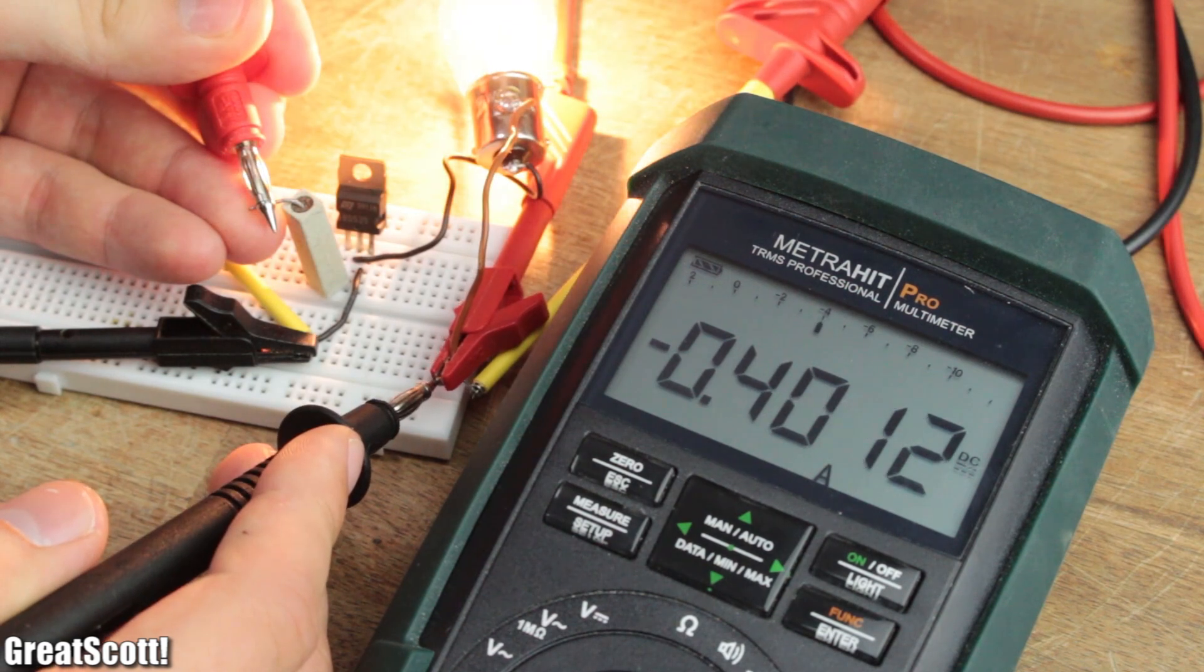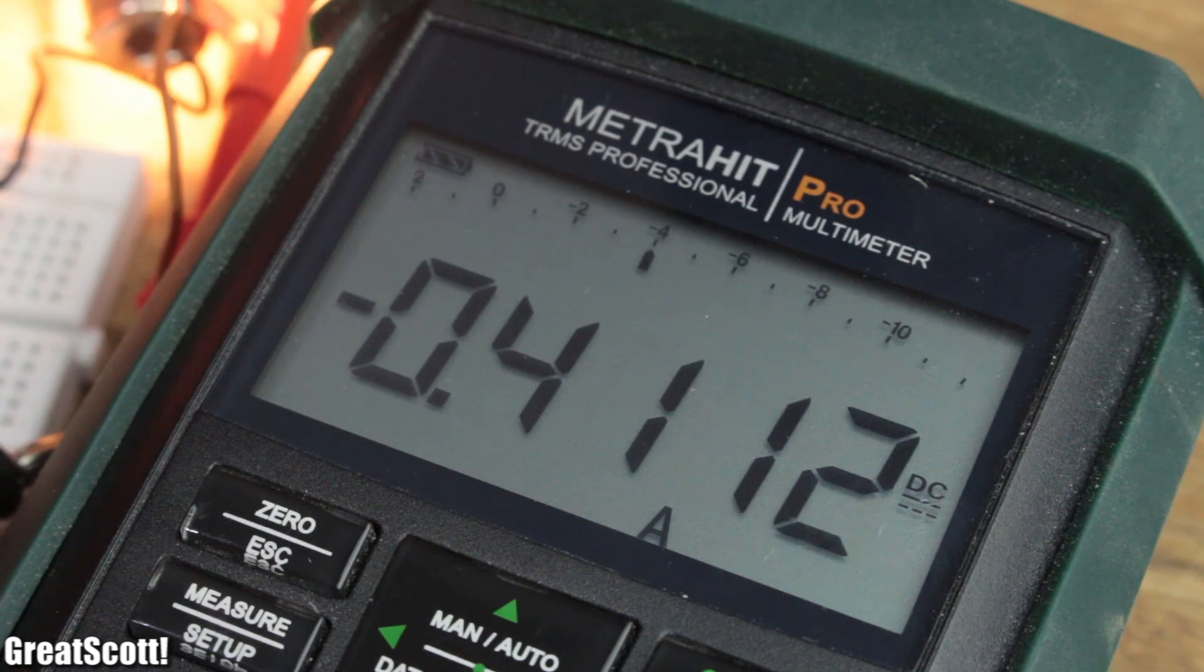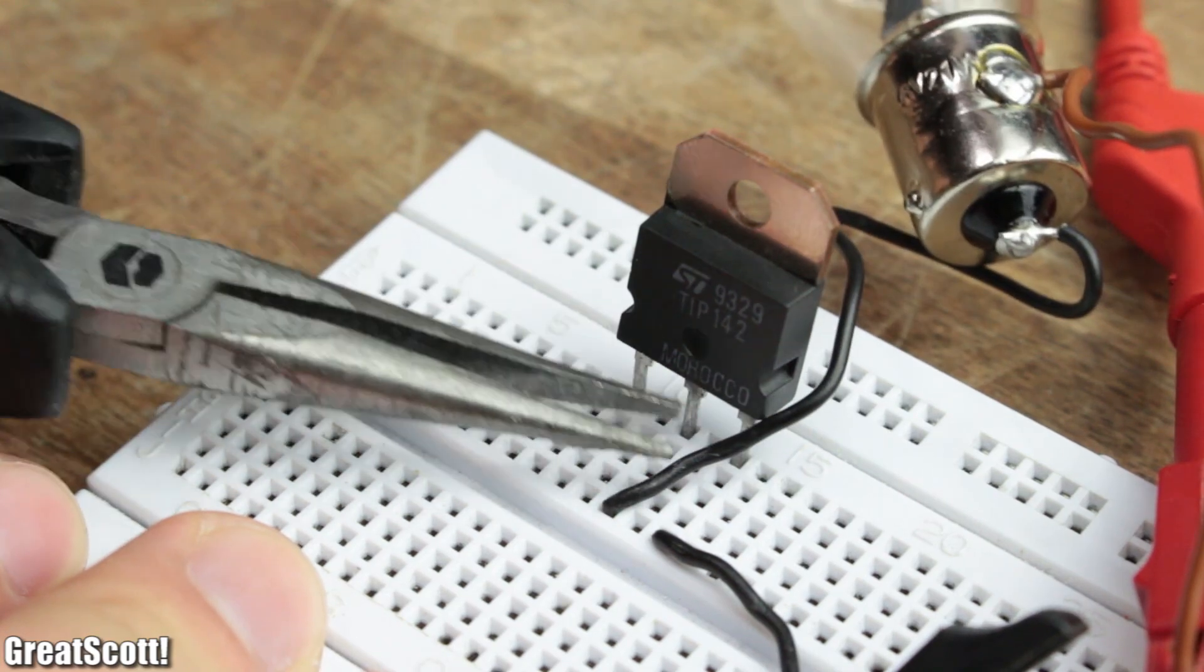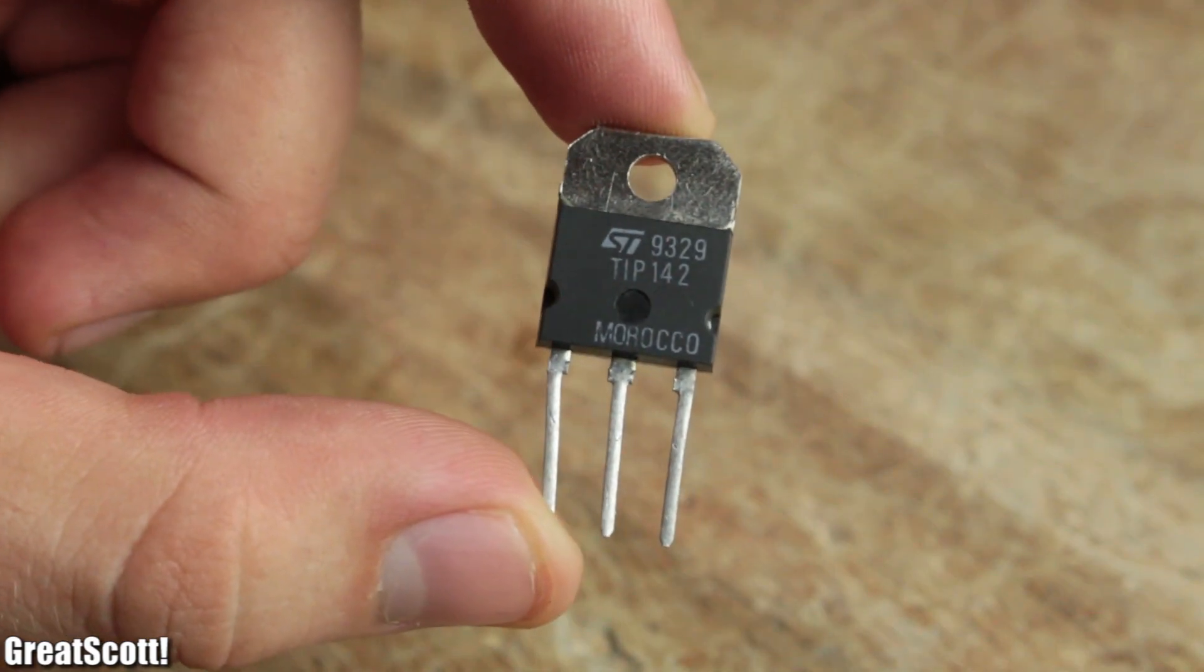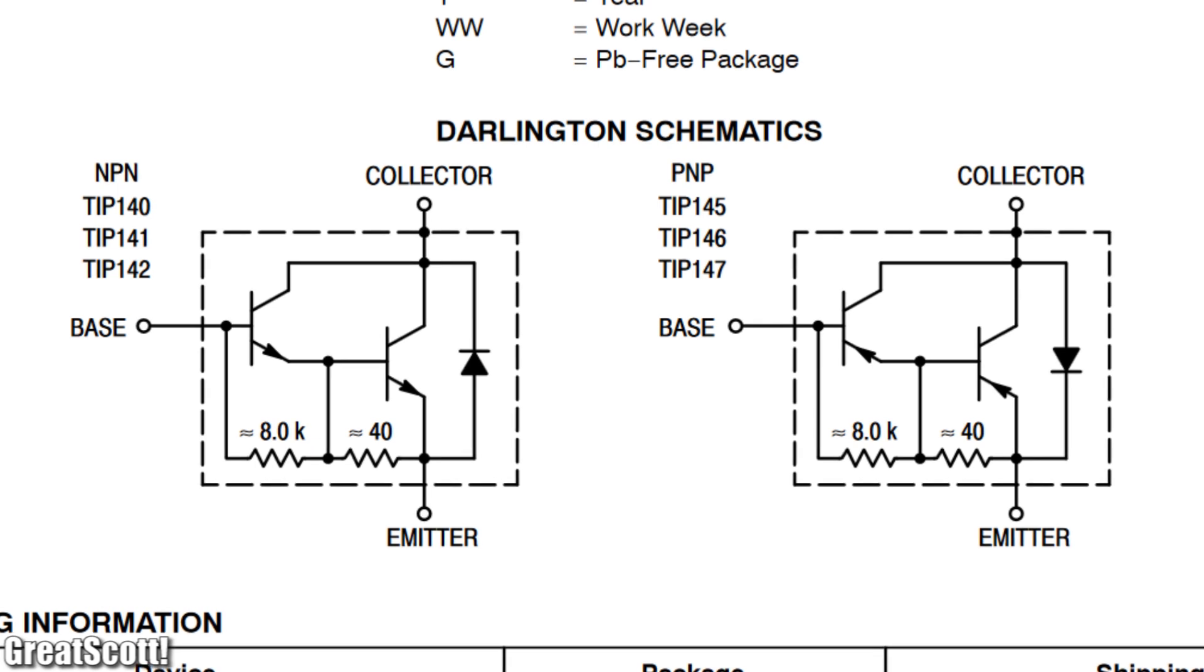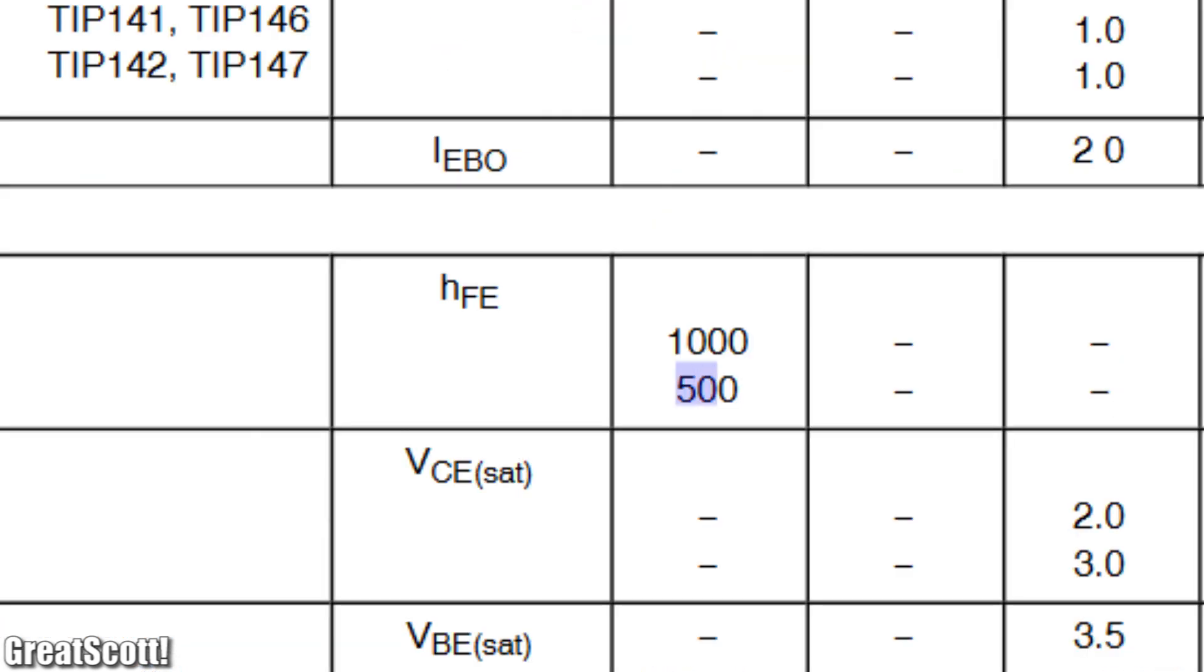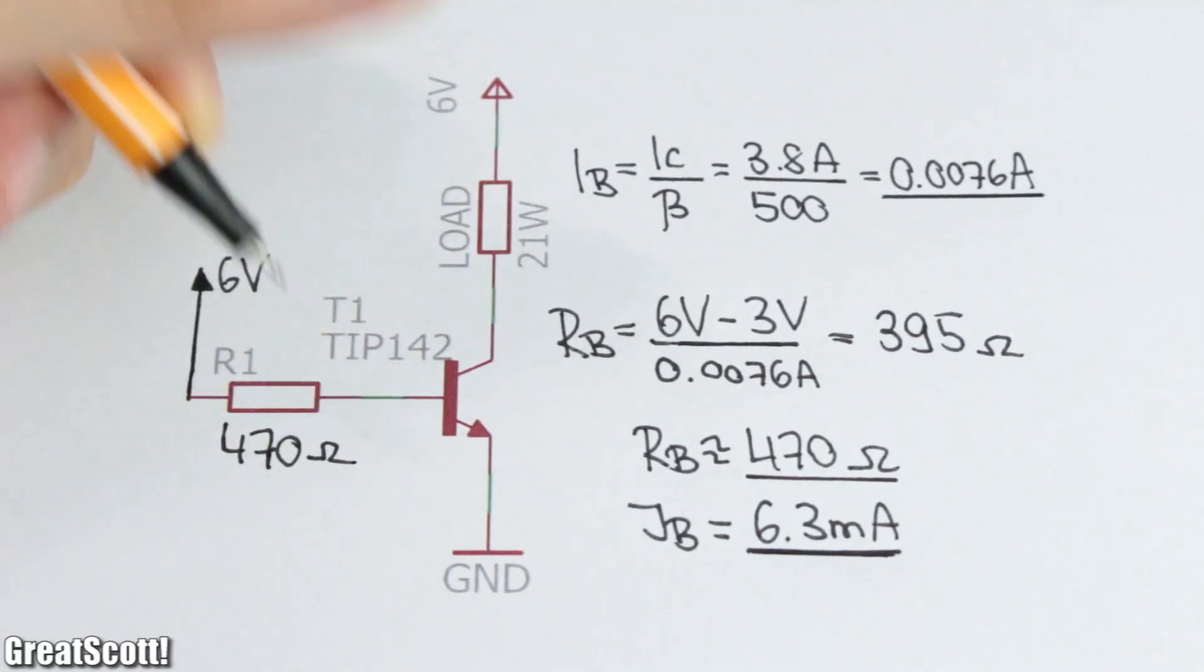And since my base current requires around 420 milliamps, I can also not easily use my Arduino to control it directly. But luckily there exists so-called Darlington transistors, like this TIP 142, which mainly consists of two bipolar transistors. This way its current gain is a lot bigger.